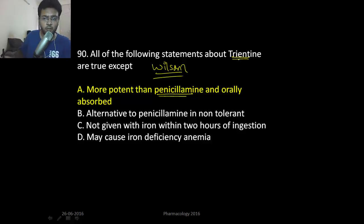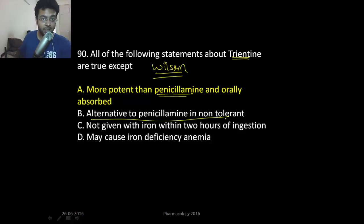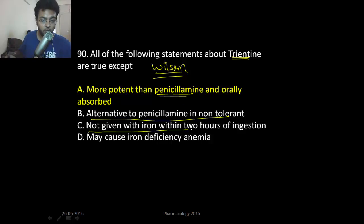You can also use trientine, which is not as potent as penicillamine but is an alternative that is better tolerated. The key points about trientine: it is an alternative to penicillamine in patients who are non-tolerant of penicillamine, it should not be given with iron within two hours of ingestion, and it can cause iron deficiency anemia.